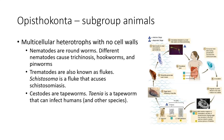Trematodes are flukes — flatworms. Imagine that you took a worm and pressed it between the pages of a book; that's what a flatworm is. There are two classes we're going to talk about: the trematodes (flukes) and the cestodes. Flukes are usually gastrointestinal parasites and very often attack the liver specifically. The life cycle shown in this picture is Schistosoma.